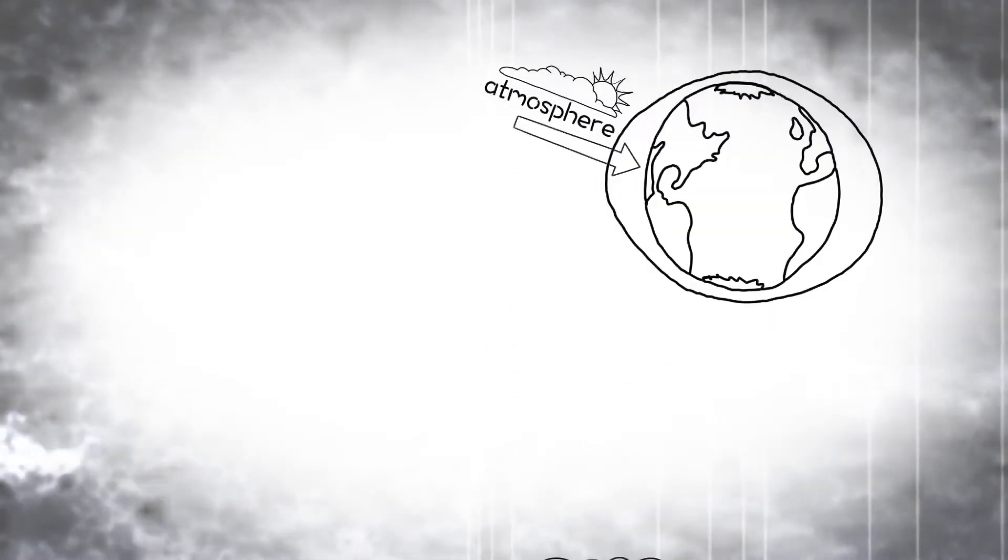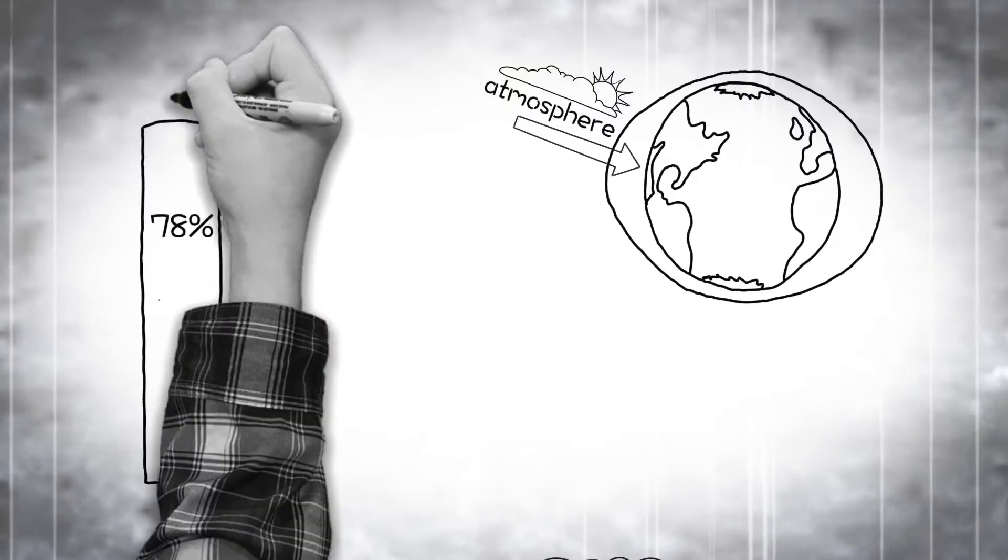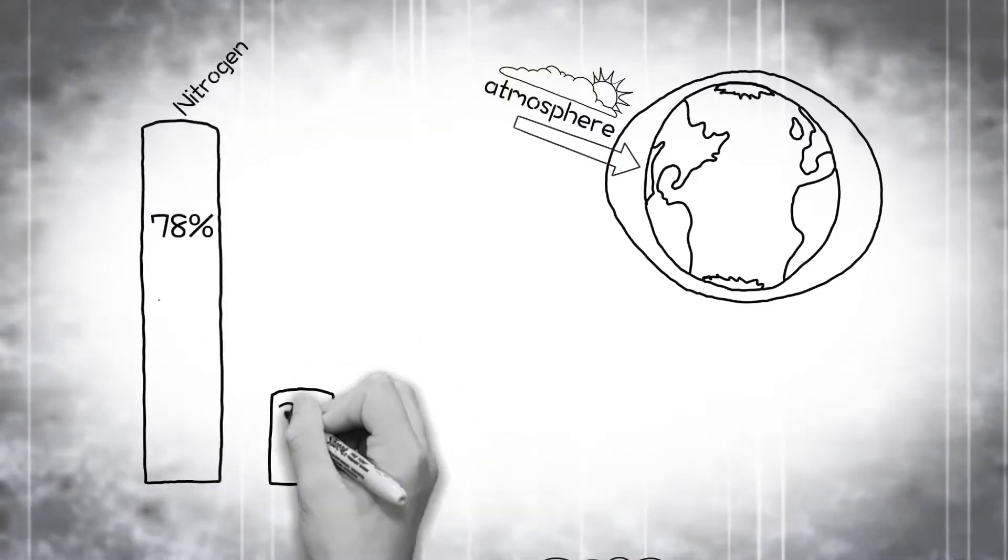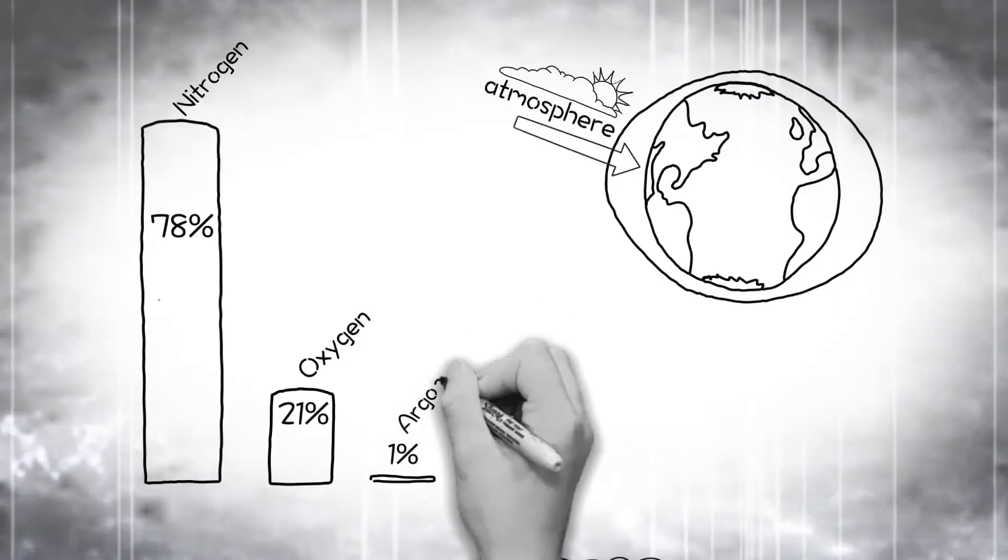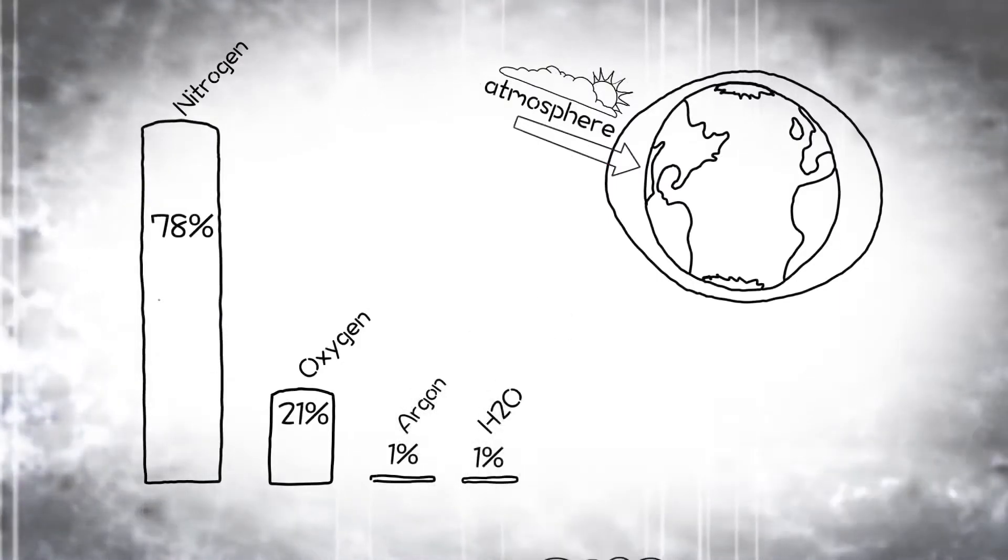Look, there's only one reason we're alive, and it's because Earth is one of the rare planets with an atmosphere. It's made up of 78% nitrogen, 21% oxygen, 1% argon, 1% water vapor.